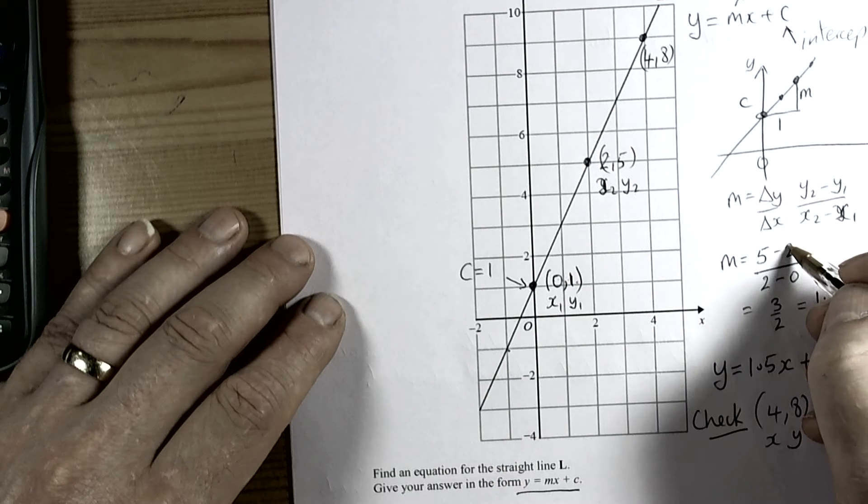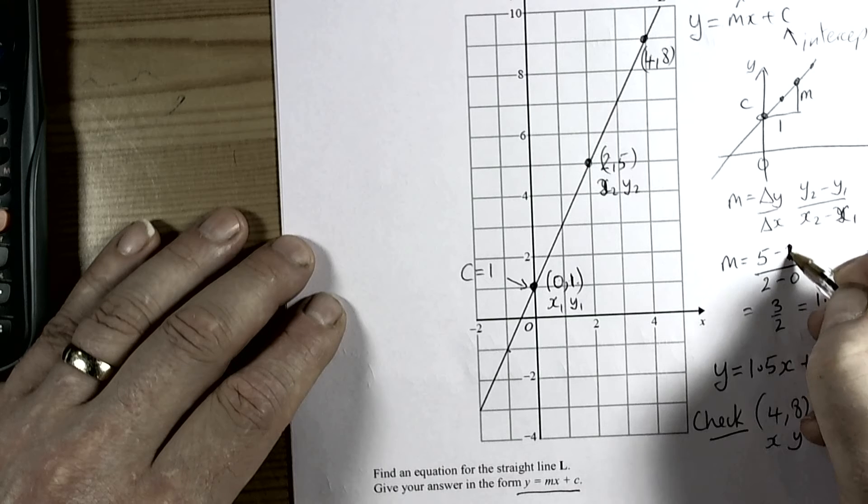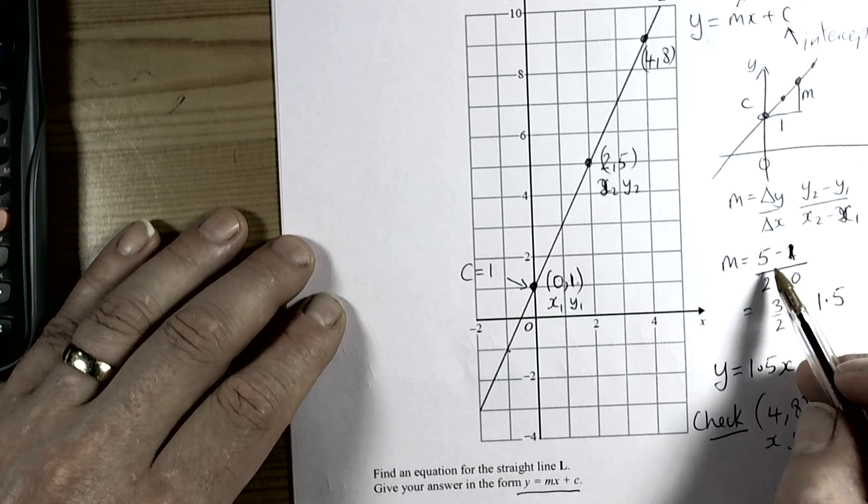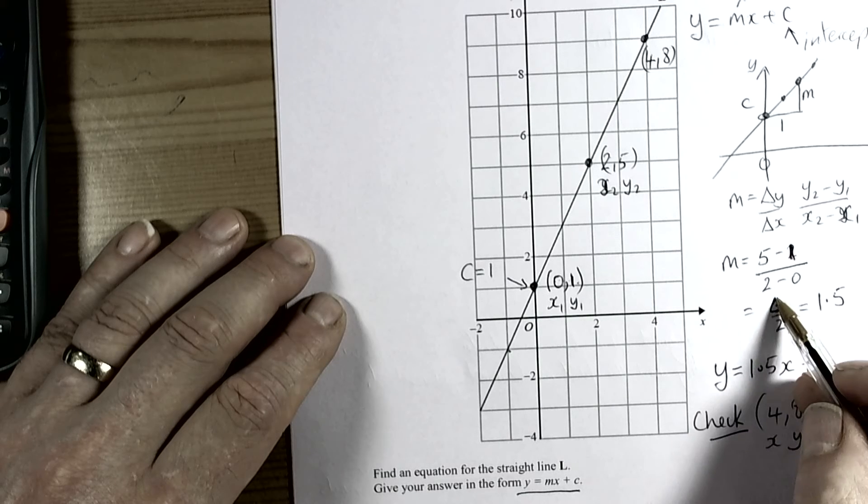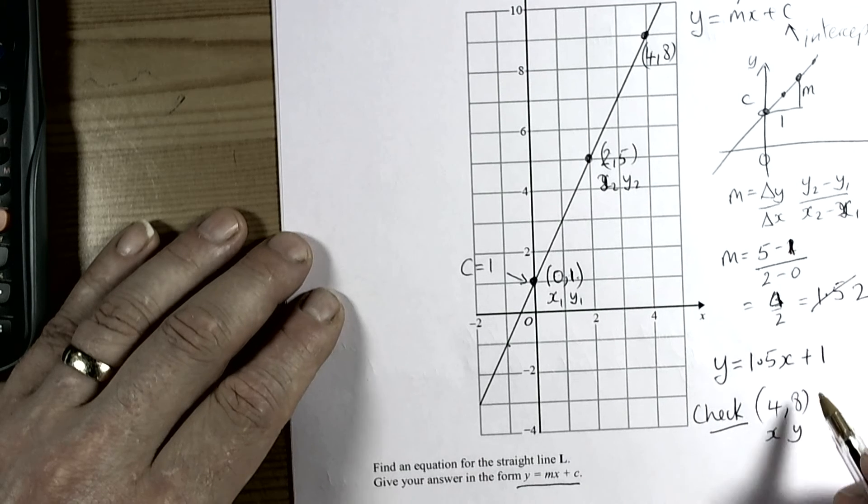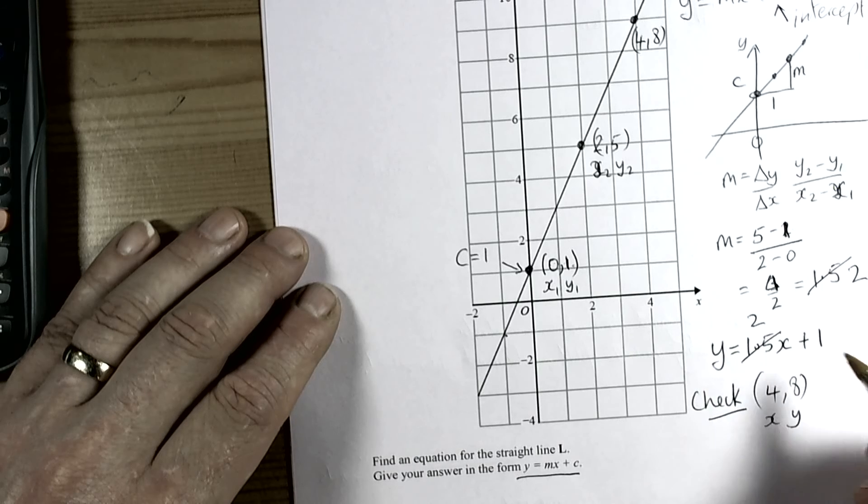This is the reason why we check, guys, because we can make silly mistakes. So 5 take away 1 is actually 4, and 4 divided by 2 is actually 2, and therefore this will be 2.